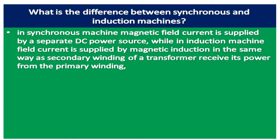In a synchronous machine, magnetic field current is supplied by a separate DC power source. While in an induction machine, field current is supplied by magnetic induction, in the same way as a secondary winding of a transformer receives its power from the primary winding. That is the main difference.